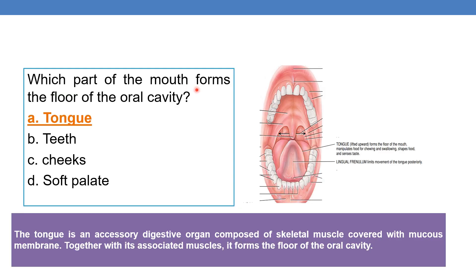Which part of the mouth forms the floor of the oral cavity? The roof is formed by the palate, whereas the floor is formed by the tongue. The tongue forms the floor of the mouth and it manipulates food for chewing and swallowing, shapes the food, and senses taste. The tongue is an accessory digestive organ composed of skeletal muscle covered by mucous membrane. Together with its associated muscles, it forms the floor of the oral cavity.